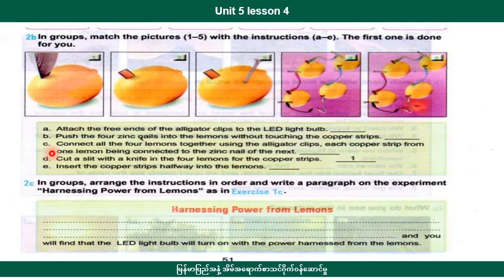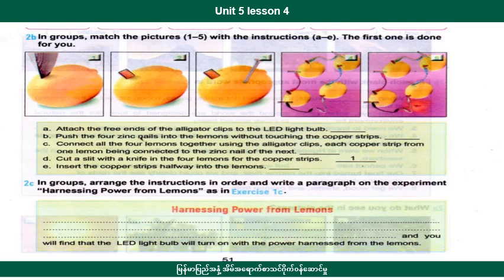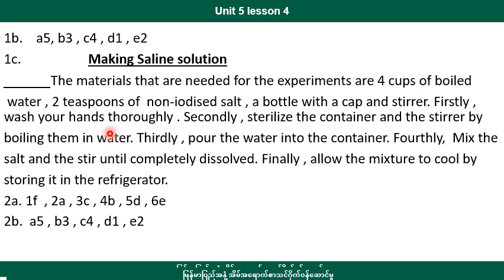Insert the copper strip halfway into the lemons. Use a knife to cut a slit in the four lemons for the copper strip. The materials needed for the experiment include: saline water, a bottle, a container, and a stirrer.